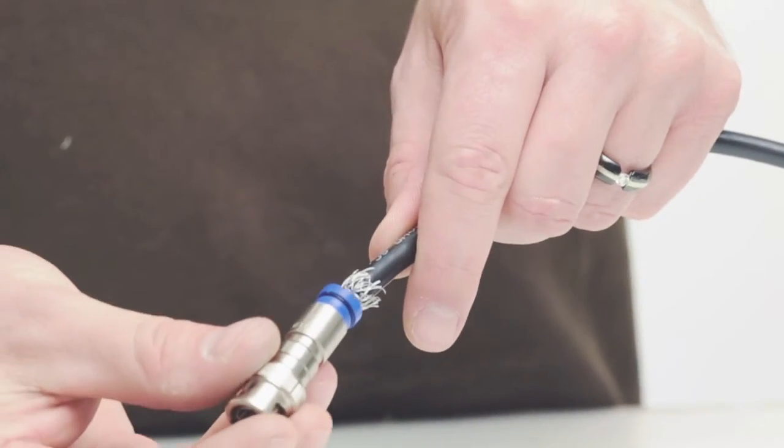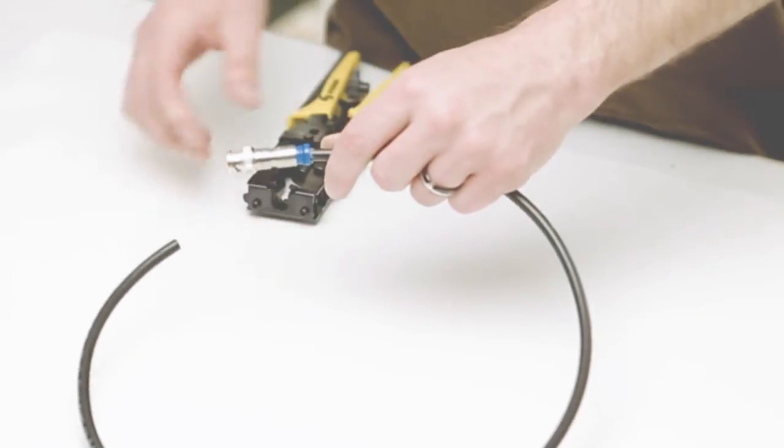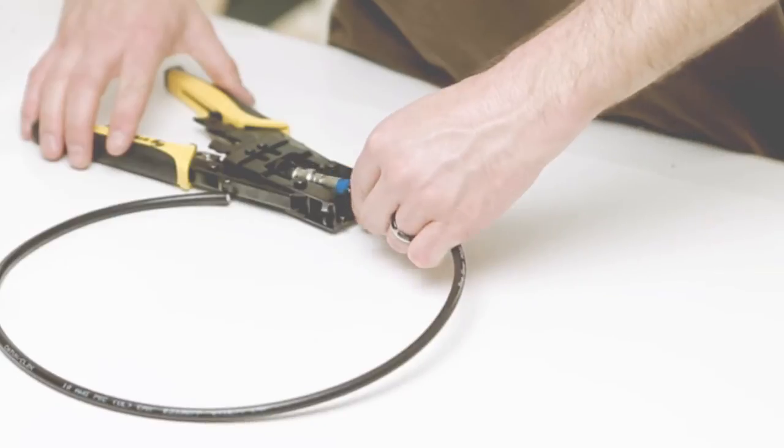Next, slide the BNC housing firmly onto the cable. Then insert the connector and cable into the compression tool.